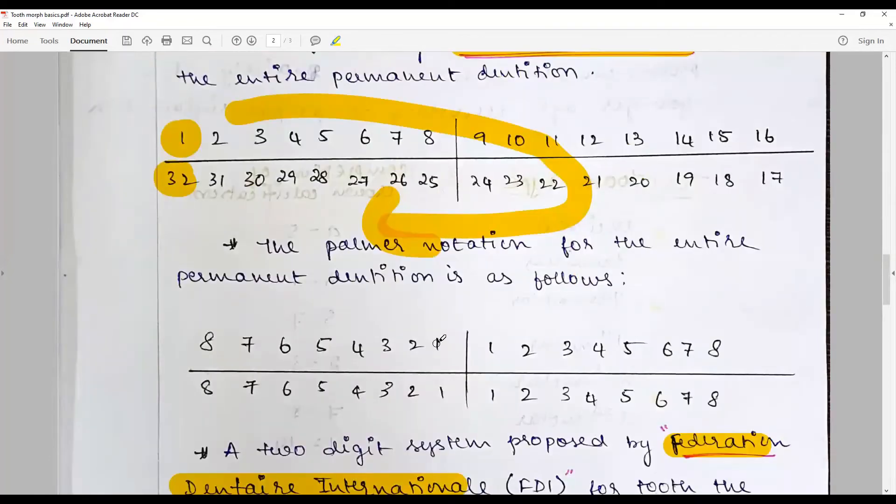Similarly, for permanent dentition, we use the numbers 1 to 8, lower the number, closer to the midline, so 1 through 8. If I write like this and write the number of the tooth, then the tooth is identified. This was not very easy to adapt to computations.